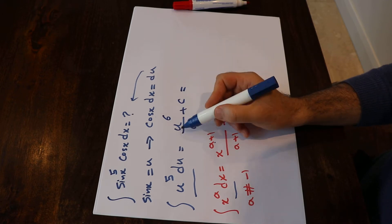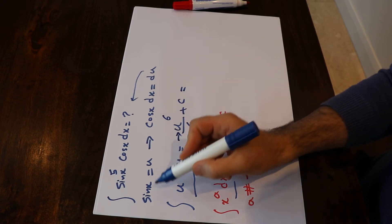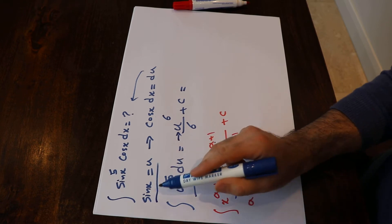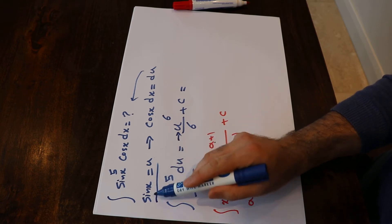So all you need to do at this stage is to substitute the parameter u with the expression you used at the beginning, with the definition you used at the beginning, which is u equal to sine x.